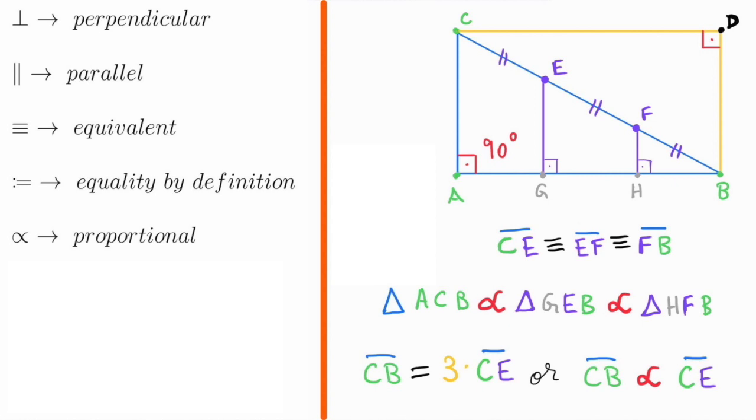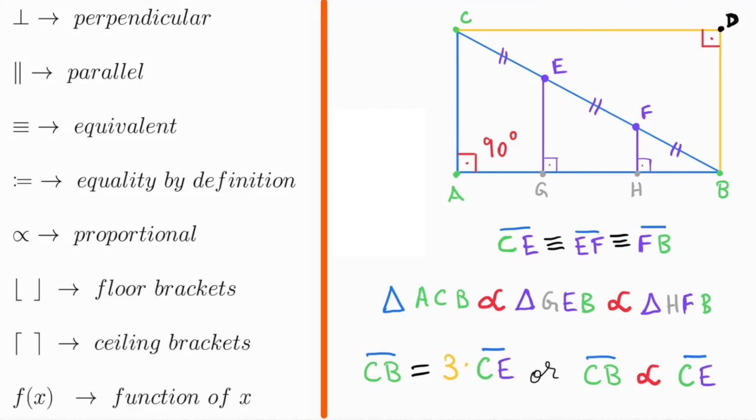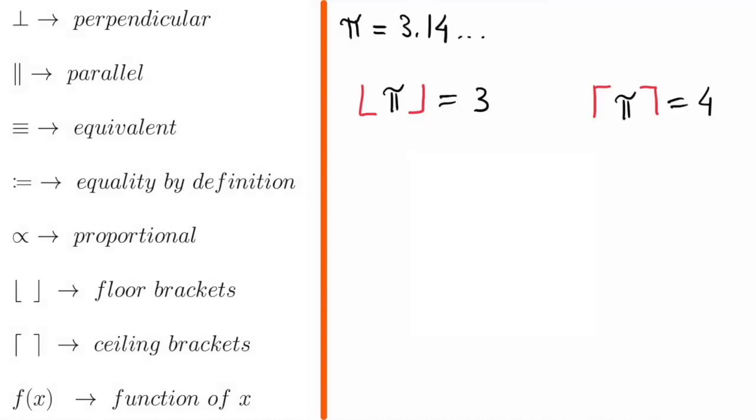Let's talk about two symbols now, the floor and the ceiling brackets. As the name suggests, the floor brackets is a function that approximates any real number by the integer right before it in the real line. Thus, the floor brackets applied to pi results in three. Analogously, the ceiling brackets approximates any real number by the integer right after it in the real line. Hence, the ceiling brackets of pi is four.